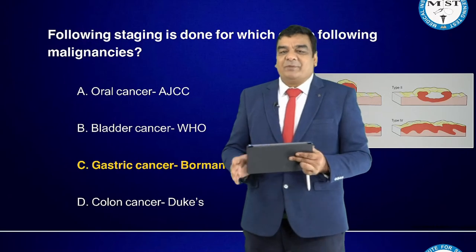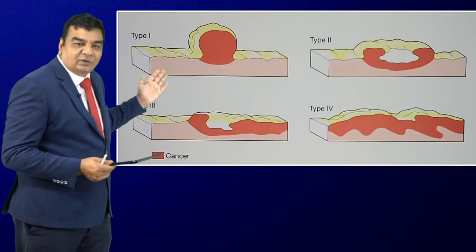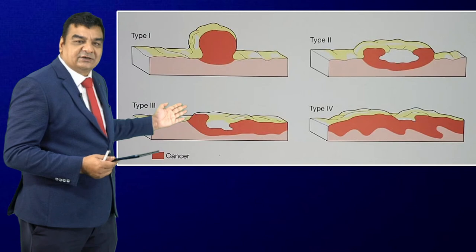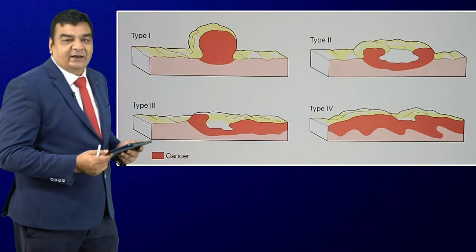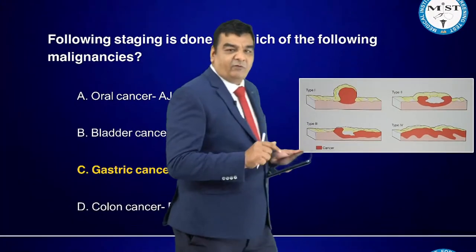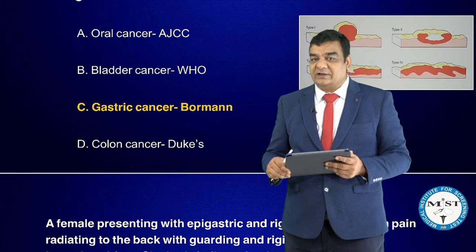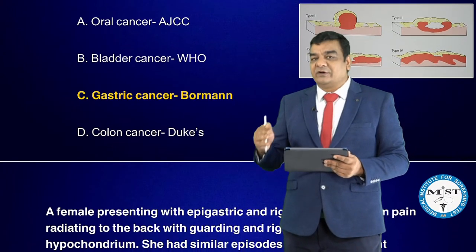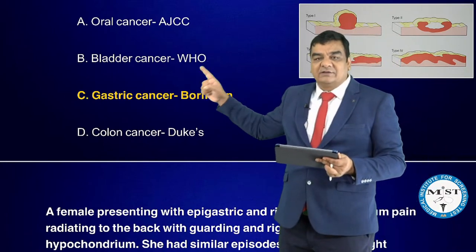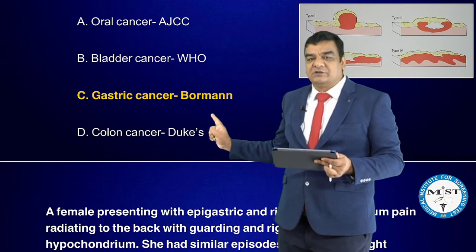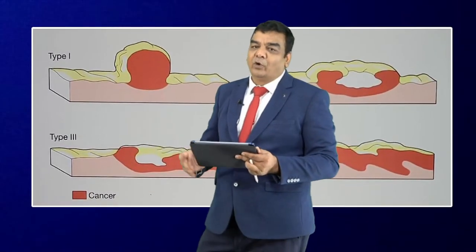This image is taken directly from Bailey and Love showing the stages of Borrmann staging of gastric cancer. The question asked: following staging is done for which malignancy? This is gastric cancer staging. Different stagings: AJCC TNM for oral cancer, WHO TNM for bladder cancer, Borrmann staging for gastric cancer, Dukes staging for colon cancer.